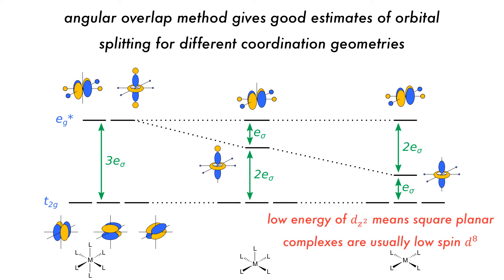Because of the drop in energy of the dz-squared orbital, square planar complexes are usually low-spin d8. For all these systems, the t2g set and the dx-squared minus y-squared orbital do not change in energy.